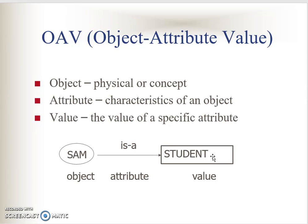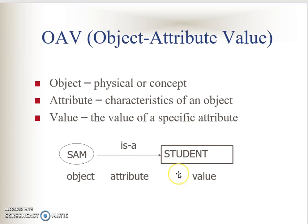We can have multiple values for an attribute. For example, 'sem' — you can replace it with your own name — is a student and also a working staff. You can write that you are a technician, manager, or businessman. At the same time, you can say you are a daughter, son, husband, or wife. So one object can have multiple values for a single attribute.